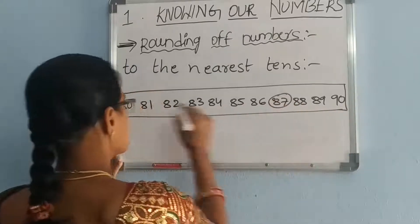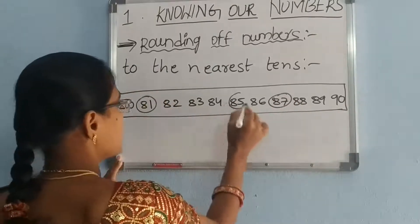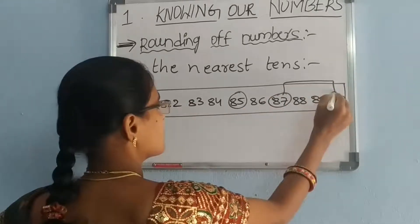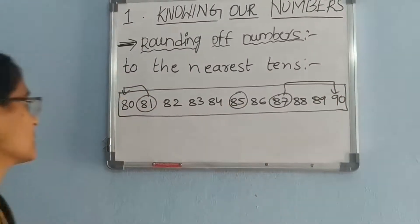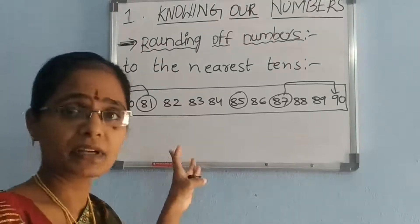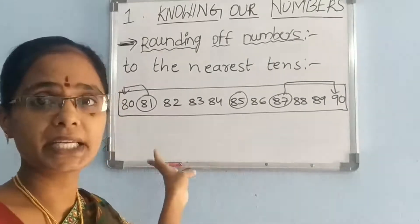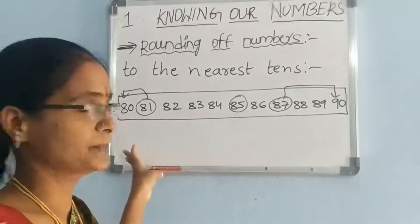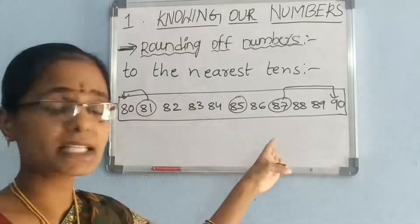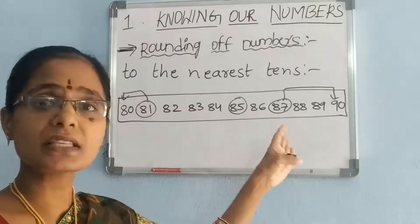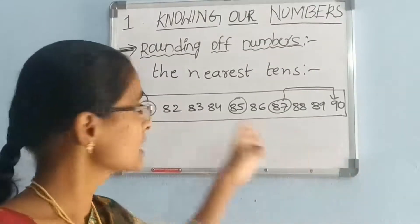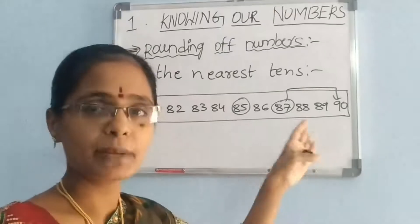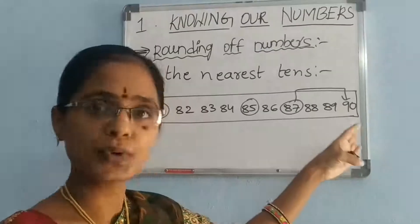Now round up 87, 81, 85. So 81 is nearer to 80 than 90, so 81 will be rounded up to 80.